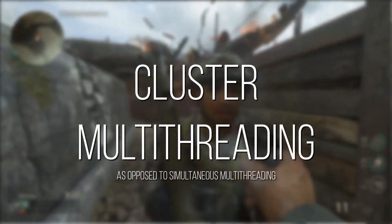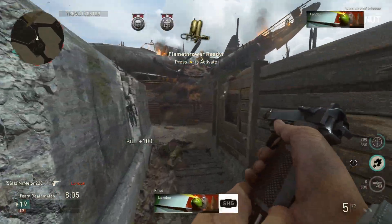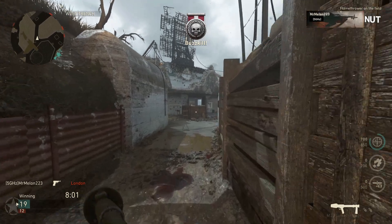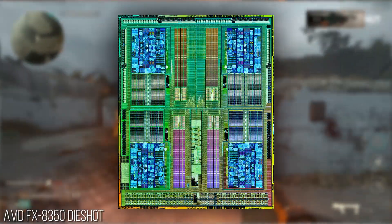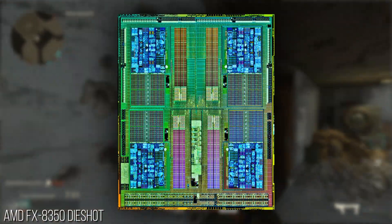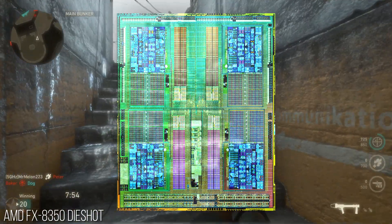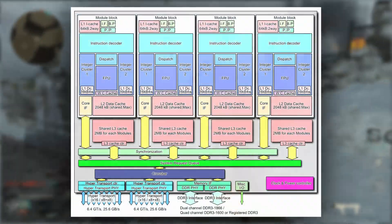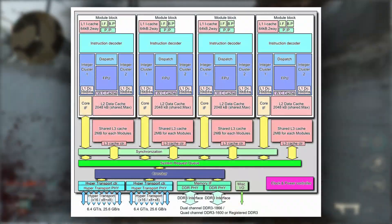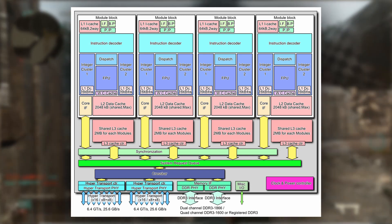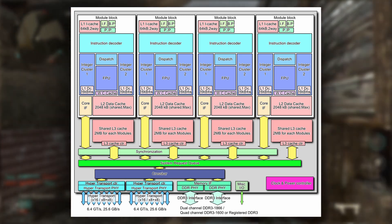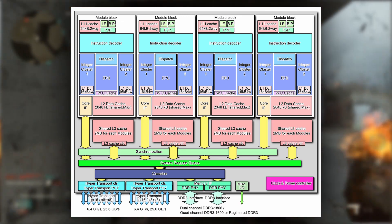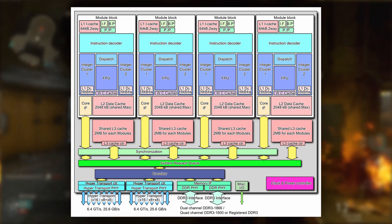Cluster multithreading differs from simultaneous multithreading in that each thread isn't only sharing support systems to the core — instead, they're actually sharing computational circuitry, which severely limits the number of instructions that can be carried out by each individual thread. Looking at a block diagram, you'll see that cores are grouped into what AMD calls modules, and these modules each technically contain two processing cores. However, only integers are able to be simultaneously computed by the individual cores.